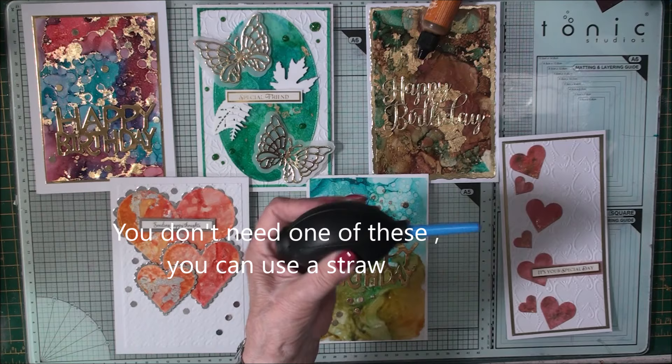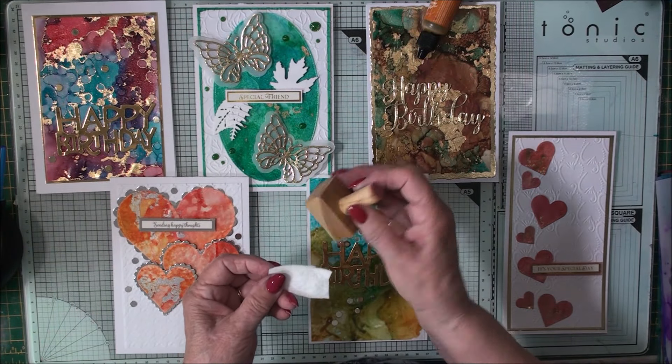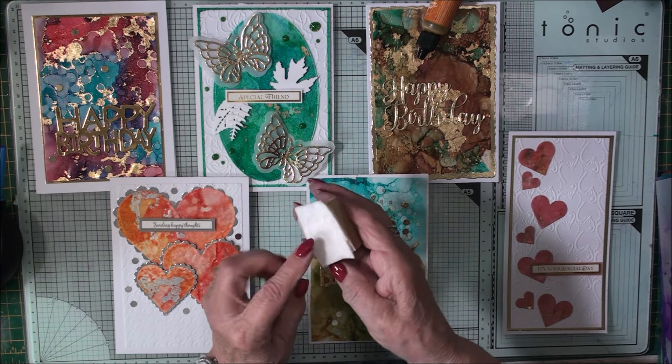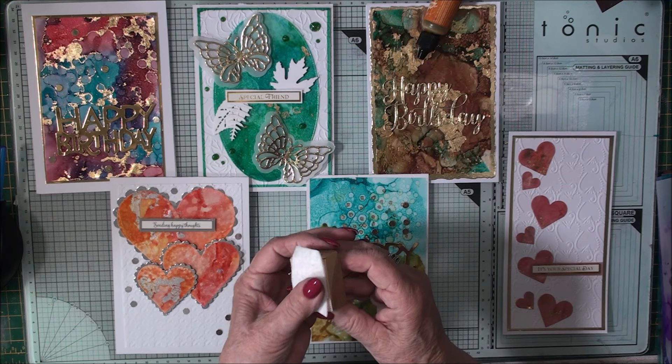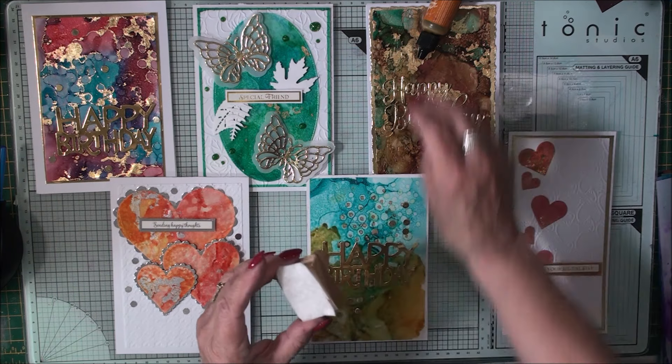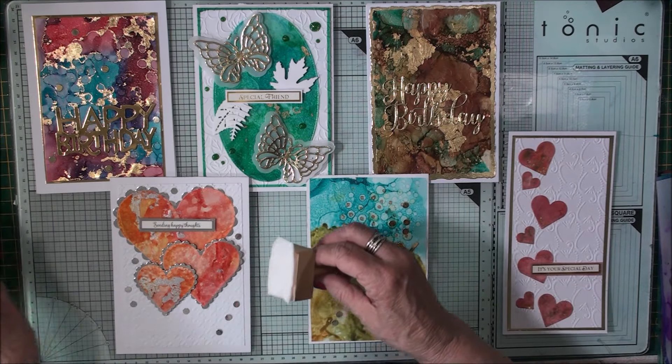I've also got a little puffer to blow the inks around and I've also got a little blending tool and on this I've just bought some cheap felt and I cut it down to fit my little block and that's going to help me put my colours onto my card.